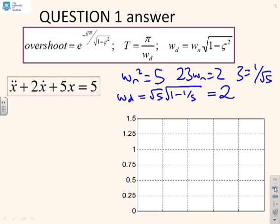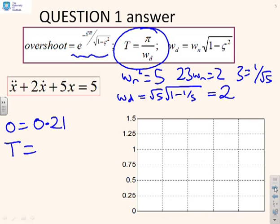I can do the overshoot. The overshoot, using this formula up here, I'm not going to rewrite it. So the overshoot, if you plug in ζ = 1 over root 5, you get 0.21. I can do T using this formula here and using this ωd here, and I get 1.57. I can also do O² which is 0.04, and O³ which is 0.008. And there's not much point doing any more.